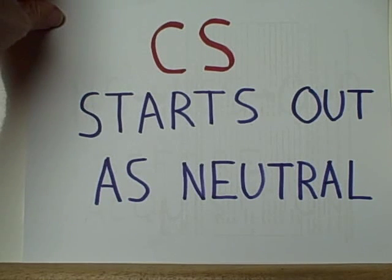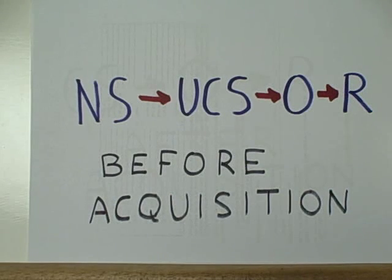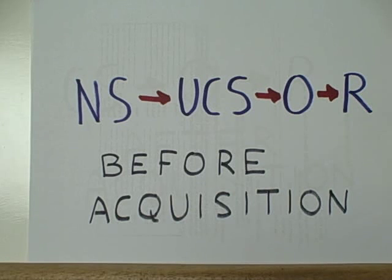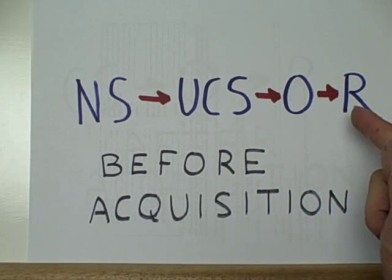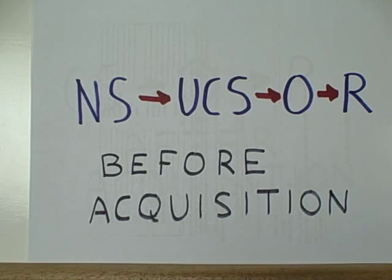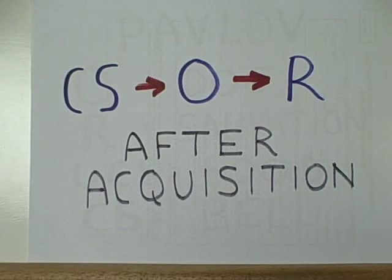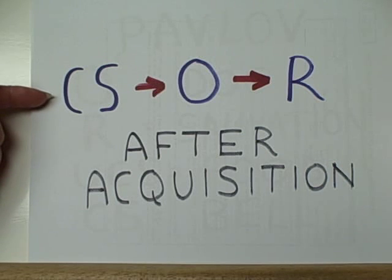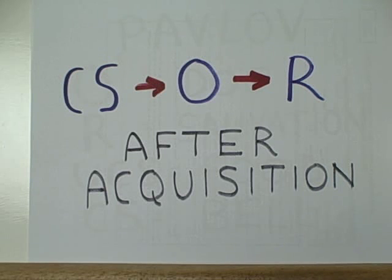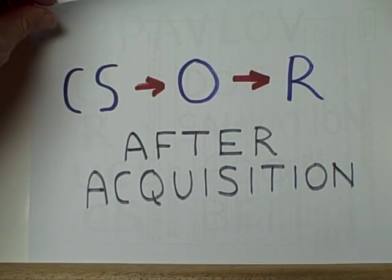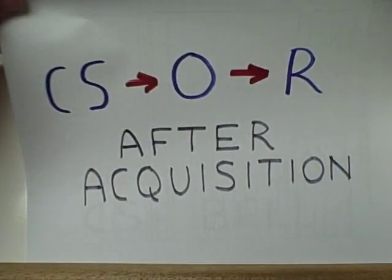It starts off as being neutral. What happens before the acquisition of a new reflex is that the neutral stimulus is presented, and that is followed by the unconditioned stimulus. Then the organism responds to the unconditioned stimulus. But after the new reflex has been acquired through many different trials, as soon as the conditioned stimulus is presented to the organism, the organism responds the same way that it did for just the unconditioned stimulus.